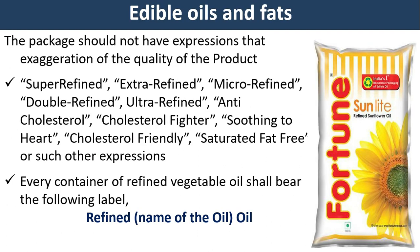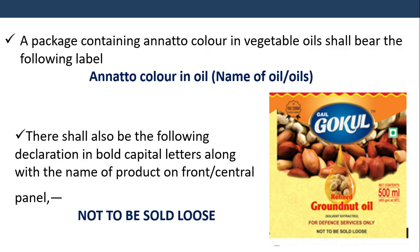For edible oils and fats, the package should not have expressions that exaggerate the quality of the product, like 'super refined,' 'extra refined,' 'micro refined,' 'saturated fat free,' or similar expressions. Every container of refined vegetable oils shall bear the label: 'Refined [name of the oil].' A package containing annatto color in vegetable oils shall bear the label: 'Annatto color in [name of the oil].' There shall also be the following declaration in bold capital letters along with the name of the product on the front or central panel: 'Not to be sold loose.'